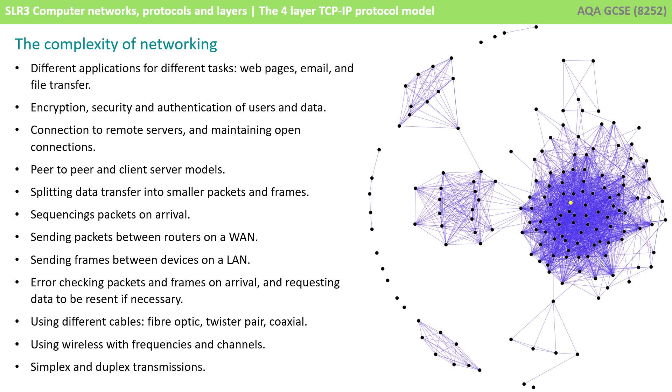We have to connect to remote servers and maintain those open connections whilst those servers are load balancing. We have peer-to-peer and client-server methods. We can split data into smaller packets and frames, and we can sequence those packets. We have to send packets between routers on a wide area network and send frames between devices on a local area network. We have to error check the packets and frames on arrival and request the data be resent if necessary. We might be using different types of cable like fibre, twisted pair and coaxial.